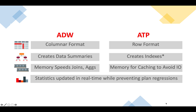The very first thing is the data format. The data is stored differently in each service. In ADW, the data is stored in a columnar format, which is the best format for analytics processing. In ATP, or Autonomous Transaction Processing, the data is stored in a row format. The row format is ideal for transaction processing or OLTP, as it allows quick access and updates to all columns in an individual record, since all data for a given record is stored together in memory and on storage.